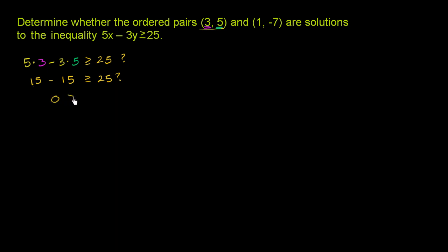So we get the expression 0 is greater than or equal to 25. This is not true. 0 is less than 25. So this ordered pair is not a solution to the inequality. You put in x is 3, y is 5. You get 0 is greater than or equal to 25, which is absolutely not true.